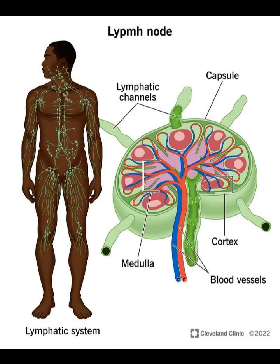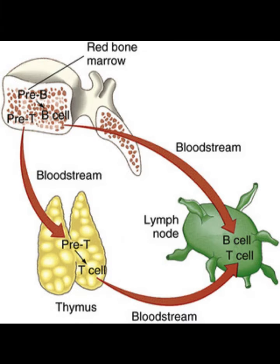Another function of the lymphatic system is to carry out immune responses. Immunity is a complex reaction involving all body systems working together to destroy and eliminate pathogens, foreign substances, and toxic materials. Occasionally called the immune system, immunity is not actually an organ system but rather a functional system drawing on structures and processes of multiple organs, tissues, cells, and the chemicals they produce.